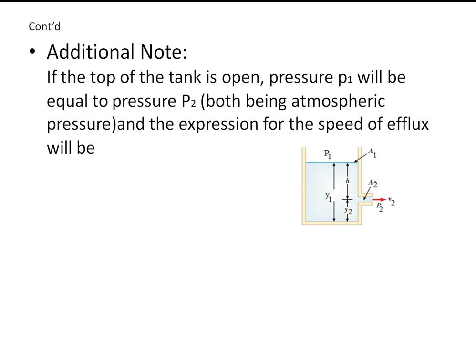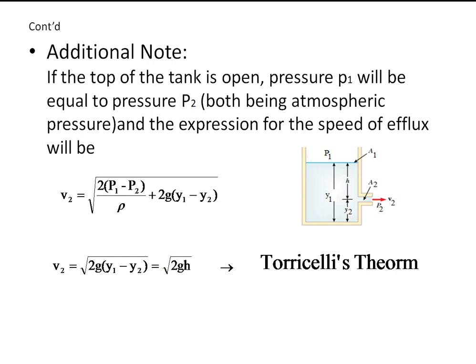Additional note: If the top of the tank that we have seen in the previous example is open, then pressure P1 and pressure P2 will both be equal to atmospheric pressure. The expression for V2 will be, taking P1 and P2 equal, V2 equals the square root of 2GH. This is known as Torricelli's theorem.